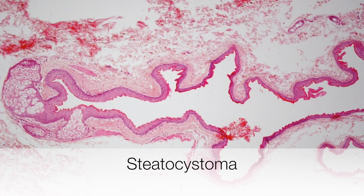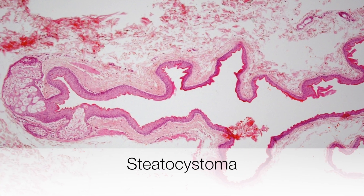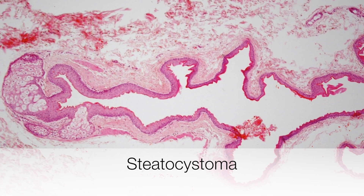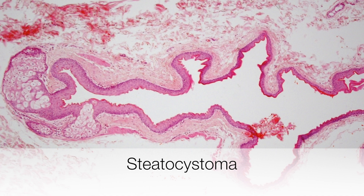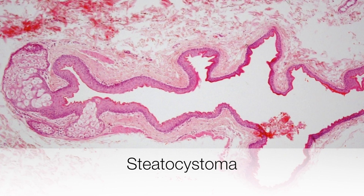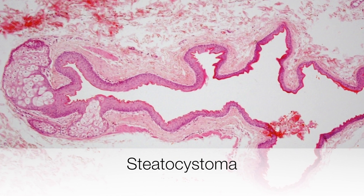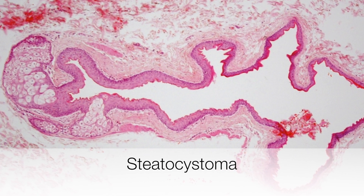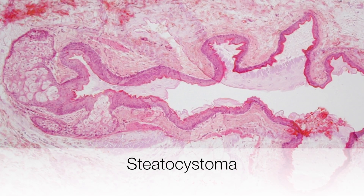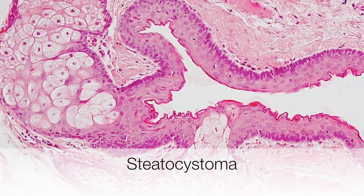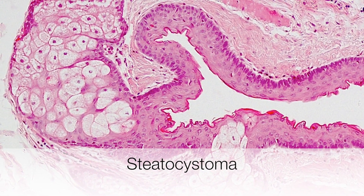The cyst has a rather corrugated appearance and is lined by stratified squamous epithelium. At the left side of the picture are small sebaceous glands that form part of the cyst.